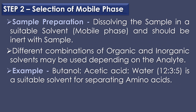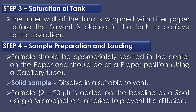The second step is selection of mobile phase. The sample is prepared by dissolving it in a suitable solvent or mobile phase which should be inert with the sample. Different combinations of organic and inorganic solvents may be used depending on the analyte. For example, butanol, acetic acid and water in the ratio of 12:3:5 is a suitable solvent for separating amino acids. The third step is saturation of tank, where the inner wall of the tank is wrapped with filter paper before the solvent is placed in the tank to achieve better resolution.